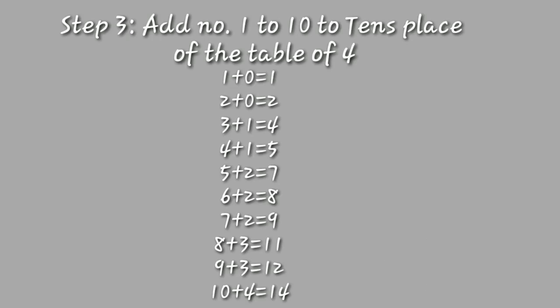In step 3, add the counting 1 to 10 with the tens place of the table of 4: 1 plus 0 equals 1, 2 plus 0 equals 2, 3 plus 1 equals 4, 4 plus 1 equals 5, 5 plus 2 equals 7, 6 plus 2 equals 8, 7 plus 2 equals 9, 8 plus 3 equals 11, 9 plus 3 equals 12, and 10 plus 4 equals 14. This gives us a new tens place. Now combine this new tens place with the older ones place from the table of 4, and you will find that you have got the table of 14.